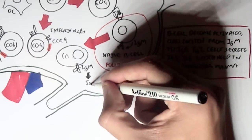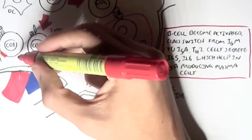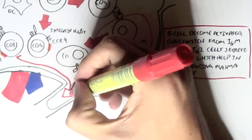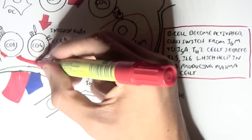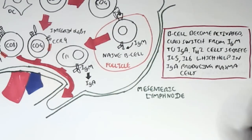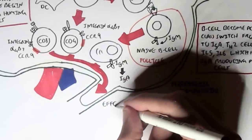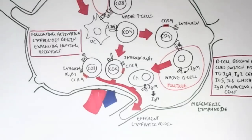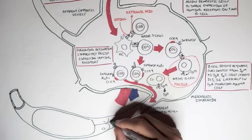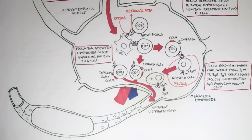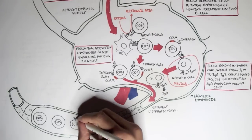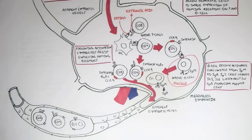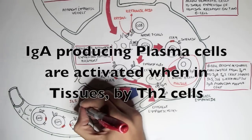So now we have an activated CD8, CD4 cell and a yet-to-become plasma cell leaving the mesenteric lymph nodes via the efferent lymphatic vessel, going to where the homing receptors will take them. The soon-to-be plasma cell gets activated when the T helper 2 cells secrete interleukin 5 and interleukin 6, which causes the plasma cell to express and secrete IgA antibodies, but this usually happens in the tissues.